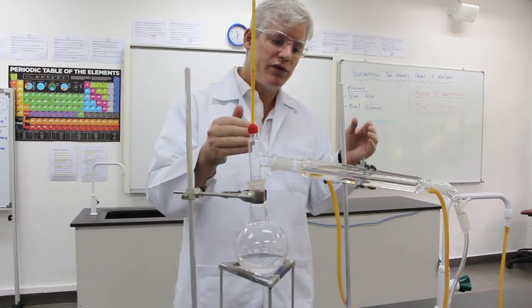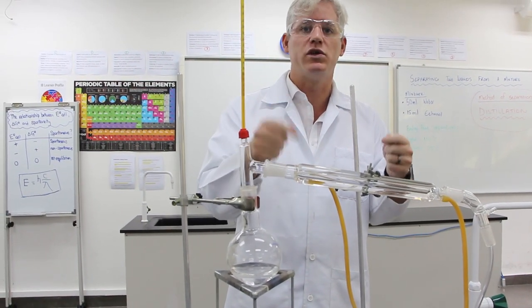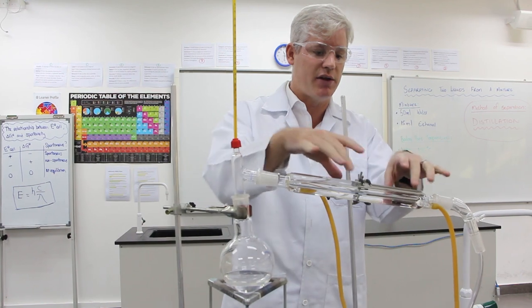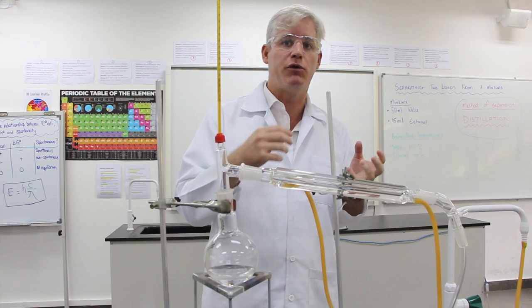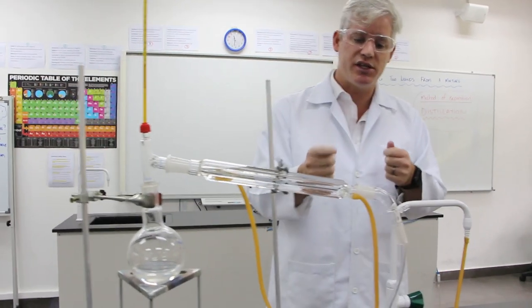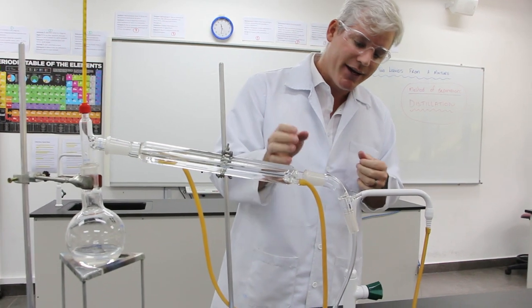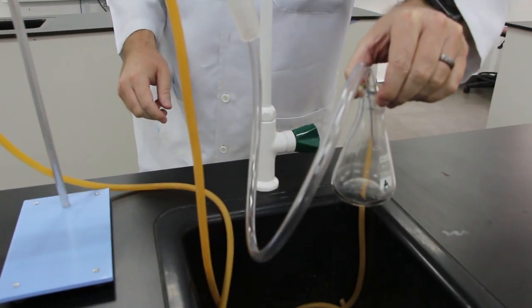It will then move down this apparatus. In this apparatus we've got cold water pumping through it along the outside. That will cool down the ethanol and turn it back into a liquid form. As it condensates, it will start to flow down these pipes and into this beaker over here.